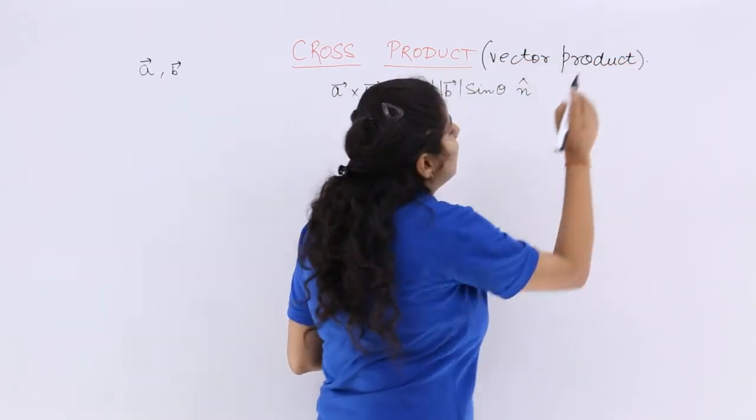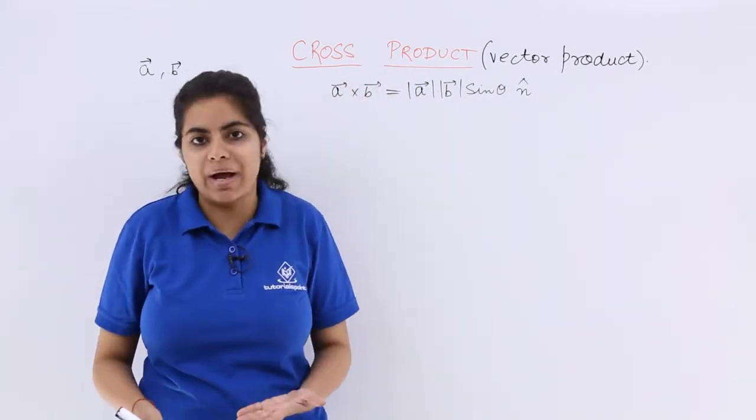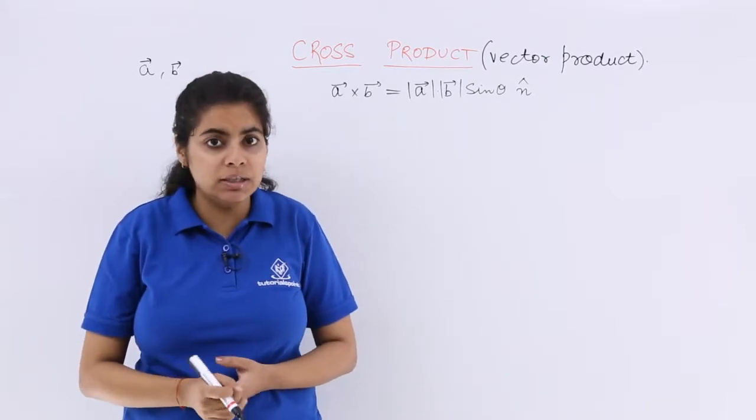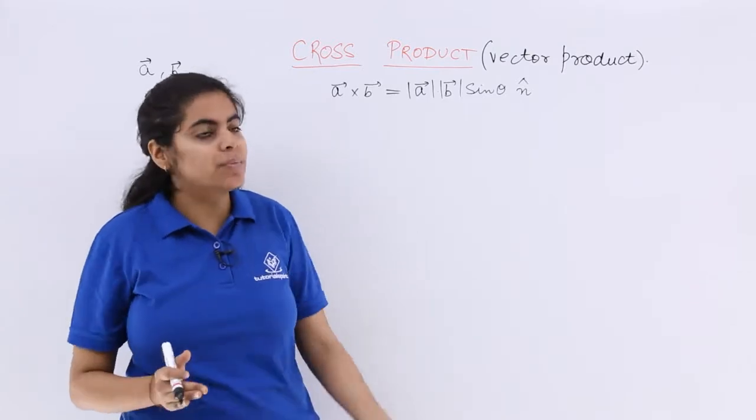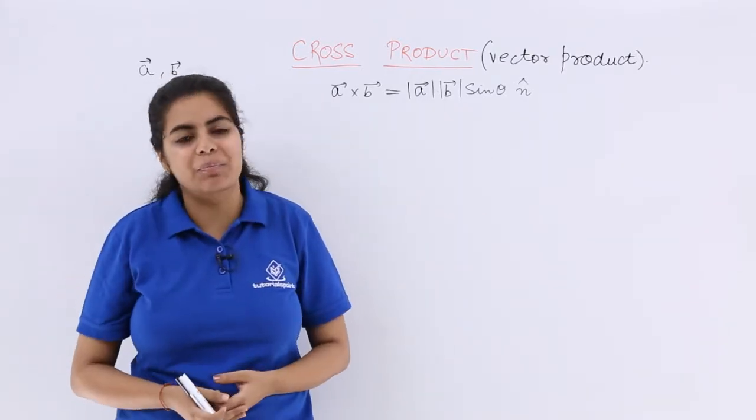So that means direction is also important in this, not only the magnitude like we studied in the previous videos of the scalar product. There was no concern with the direction but this time there is concern with the direction as well as the magnitude.